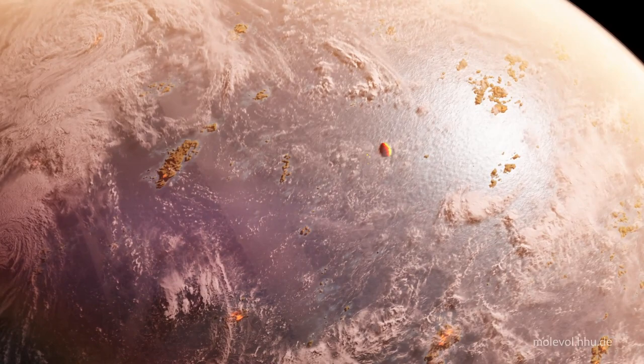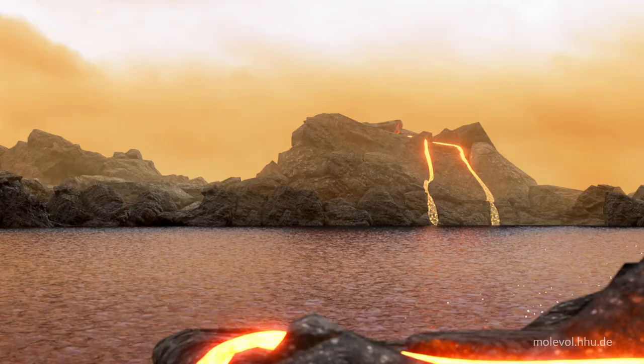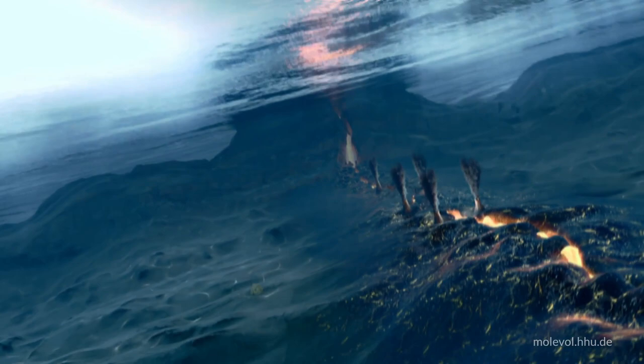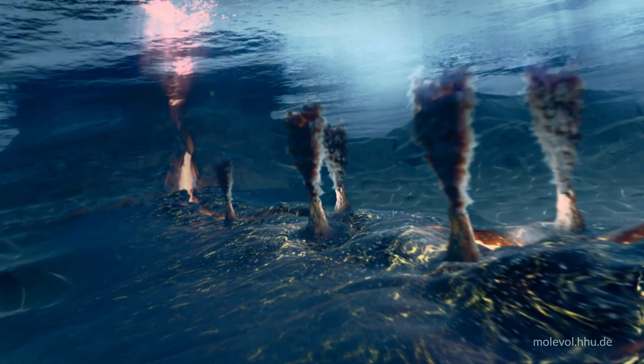The last impactors made the surface a dangerous place to be, as any land environments were under constant attack. It was much safer at the bottom of the ocean, and this is where the chemistry relevant for origins was taking place.